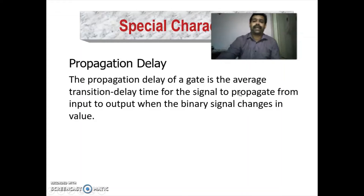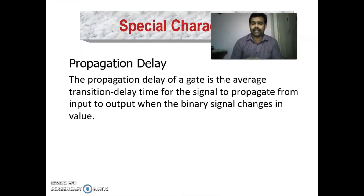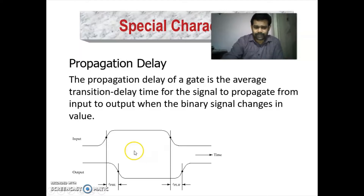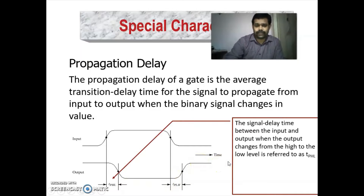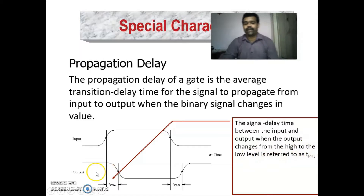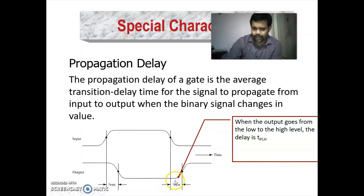Propagation delay of a gate is the average transition delay for a signal to propagate from input to output when the binary signal changes in value. TPHL is the signal delay when output changes from high to low level, and TPLH is the signal delay when output changes from low to high level.